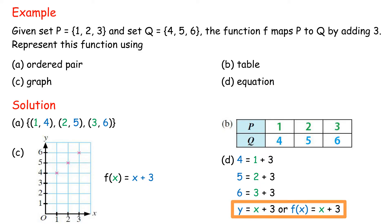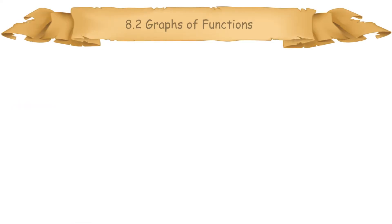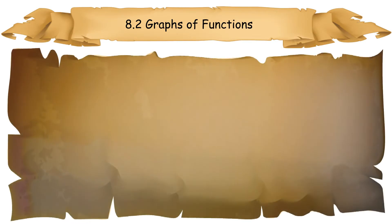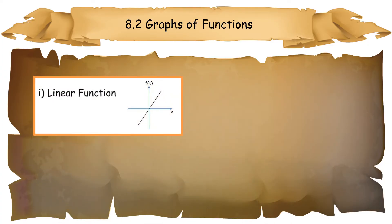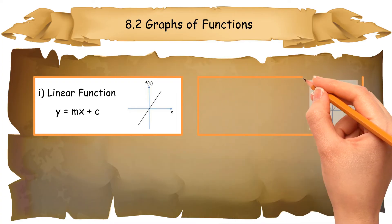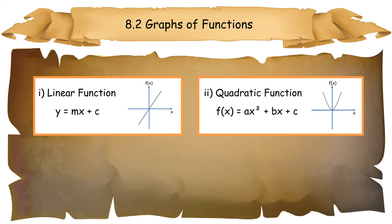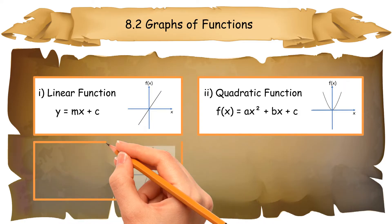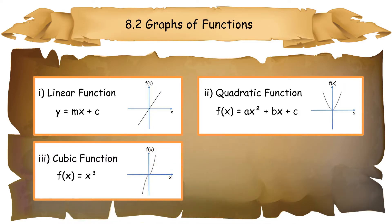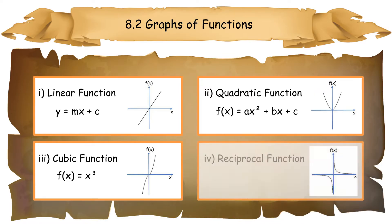8.2 Graphs of Functions. Types of function graphs: 1. Linear function: y equals mx plus c. 2. Quadratic function: f(x) equals ax squared plus bx plus c — it is a parabola curve. 3. Cubic function: f(x) equals x cubed. 4. Reciprocal function: f(x) equals 1 over x — it is a hyperbola and odd function. Its domain is all real numbers except 0, because 1 over 0 is undefined.